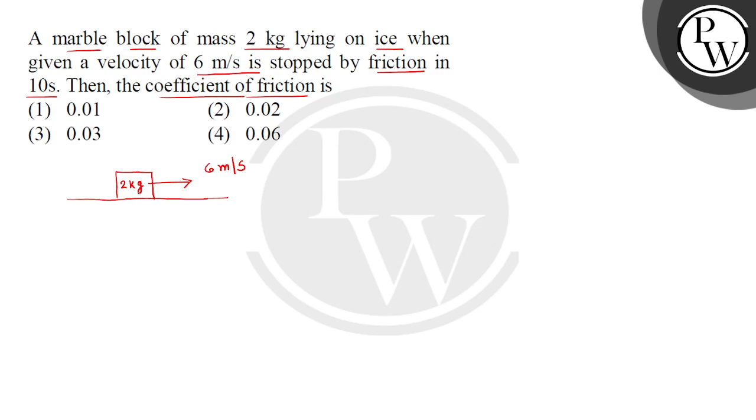Now the surface and the contact area of the marble block is in friction. So friction will act in opposite direction. So let this be the frictional force F. Because of this frictional force, this is stopped by 10 seconds. That means its final speed is 0 and the initial speed is 6 meter per second.